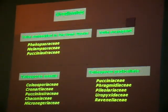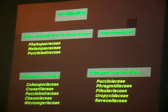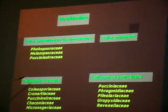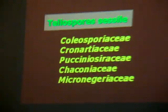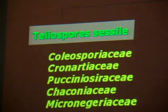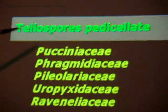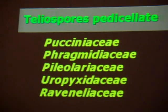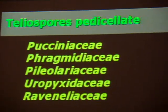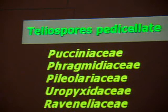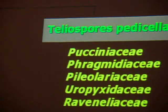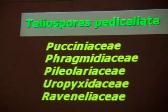If the telia are not enclosed in the host tissue — that is, if they are exposed outside — they are sub-classified into two groups: sessile teleospore genera and pedicillate teleospore genera. Among the sessile teleospore genera, the families are Coleosporiaceae, Cronarchaeaceae, Puccino-siraceae, Chakonaceae, and Micronidiaceae.